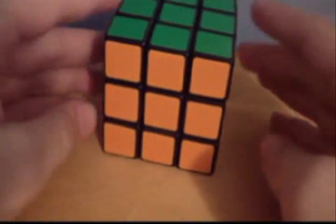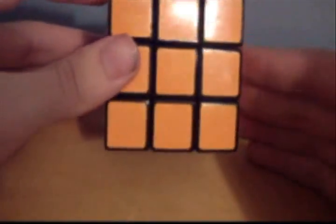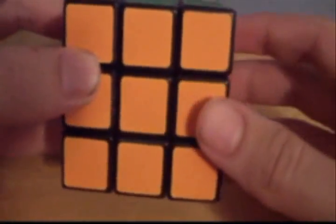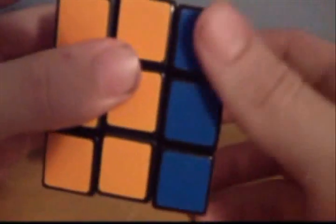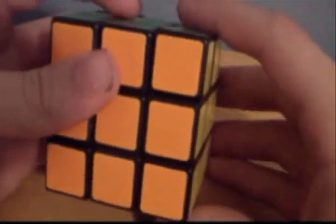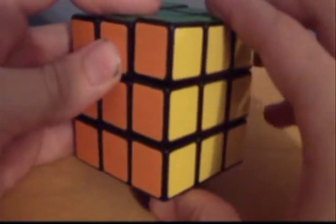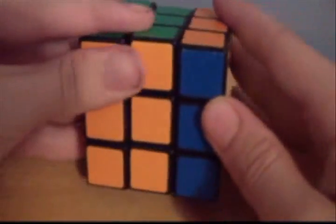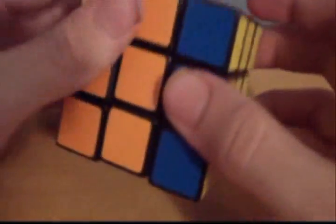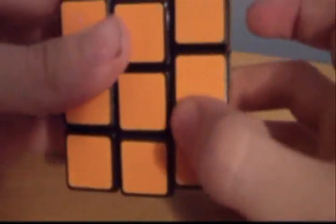First, when I tell you how to do things, I'll be saying things like right and right inverted. To understand what that means, when I say right, I mean turn the right side clockwise, and right inverted is counterclockwise.